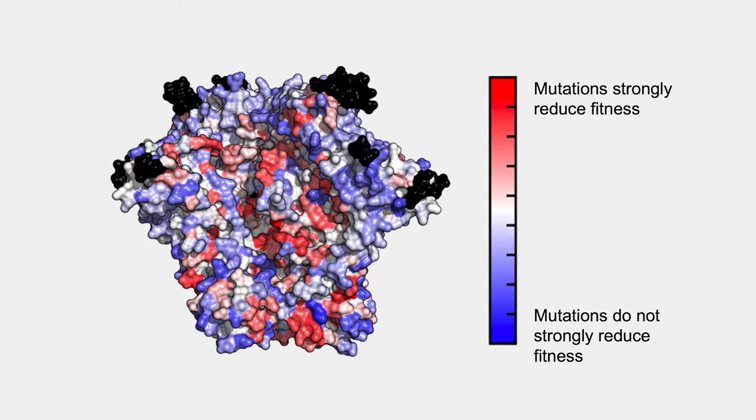if a vaccine could elicit immune responses directly towards those red regions, the mutations needed to escape would likely lower the fitness of the virus, and this fitness would likely not be easily restored through other mutations.